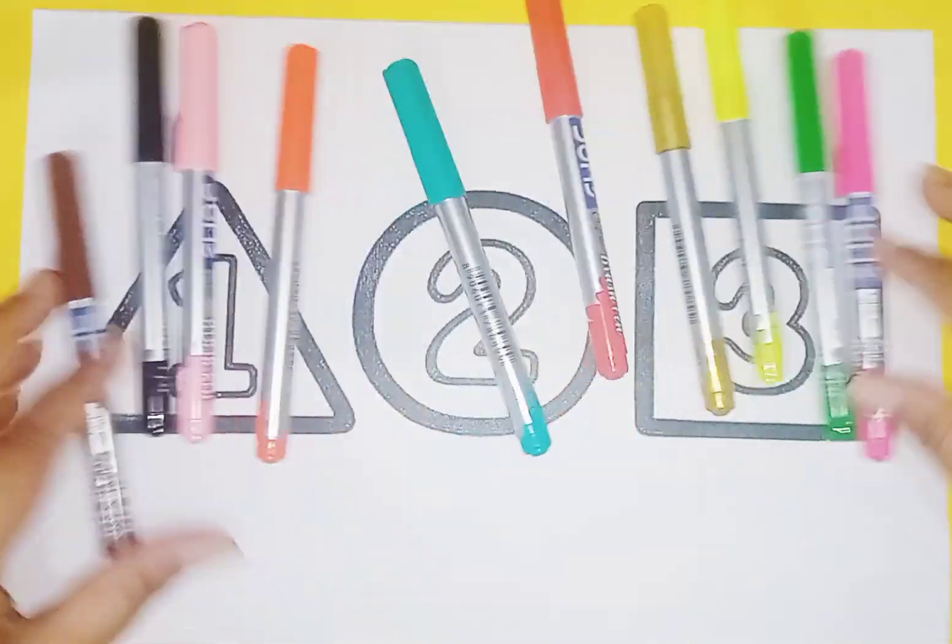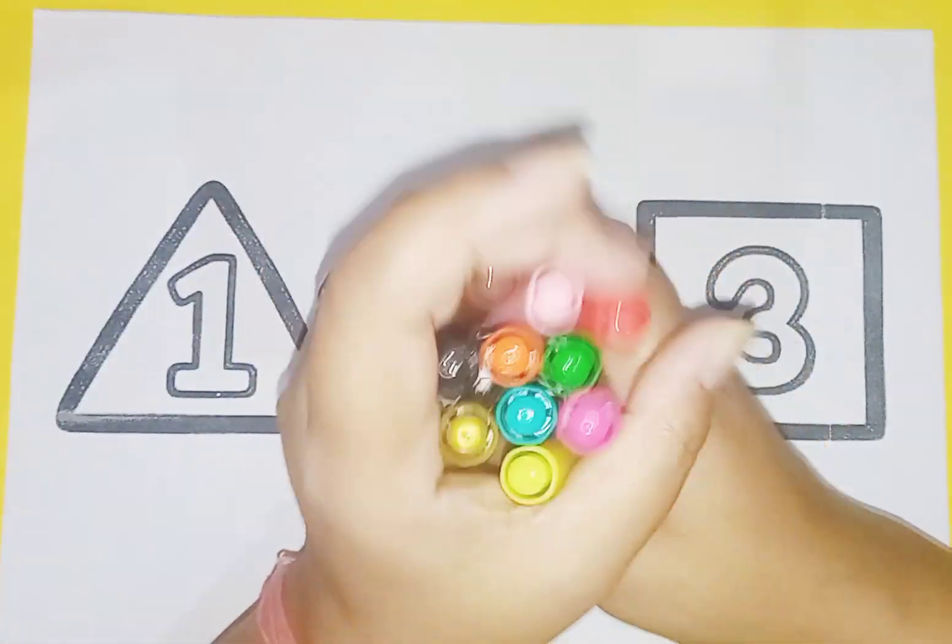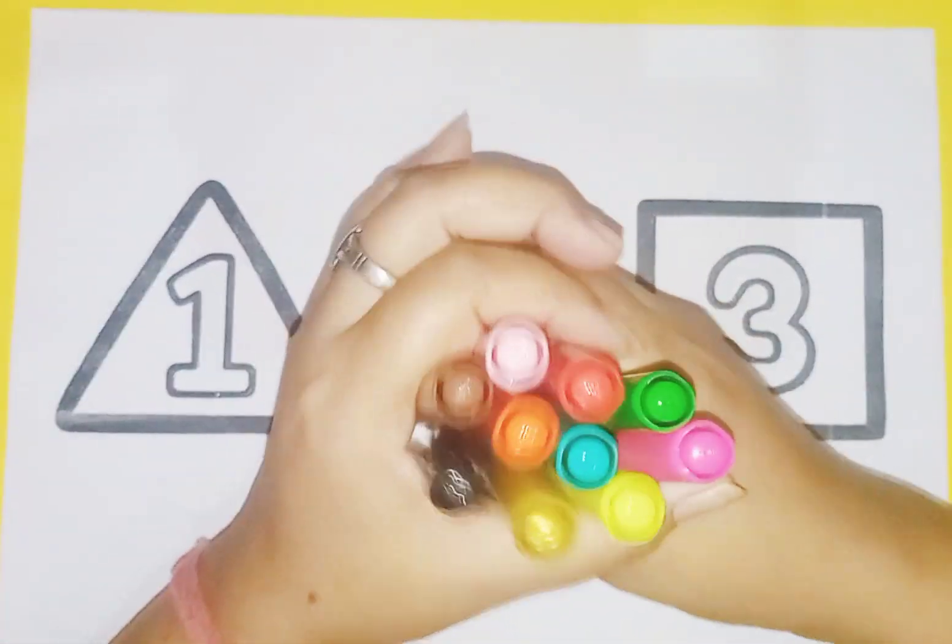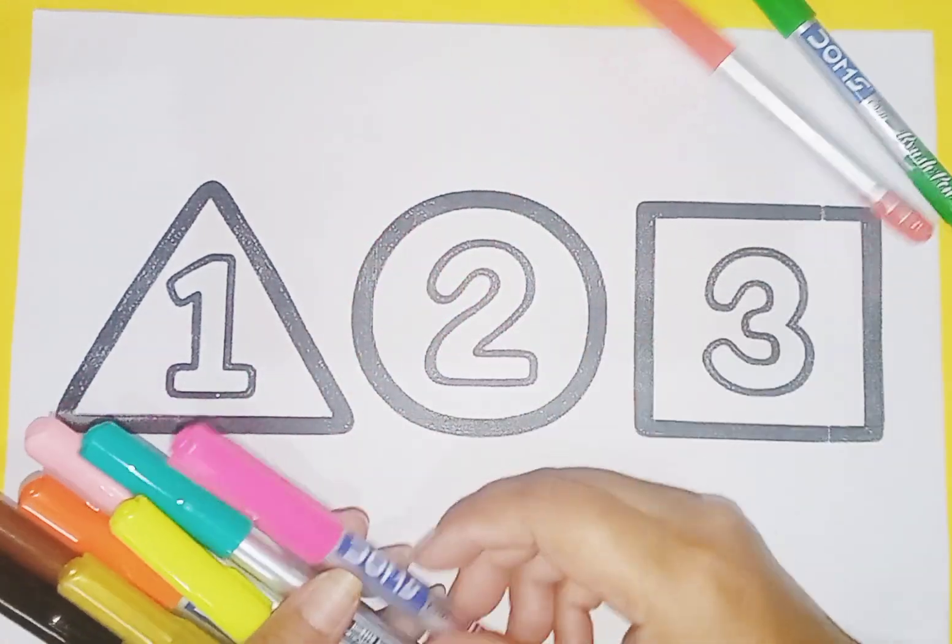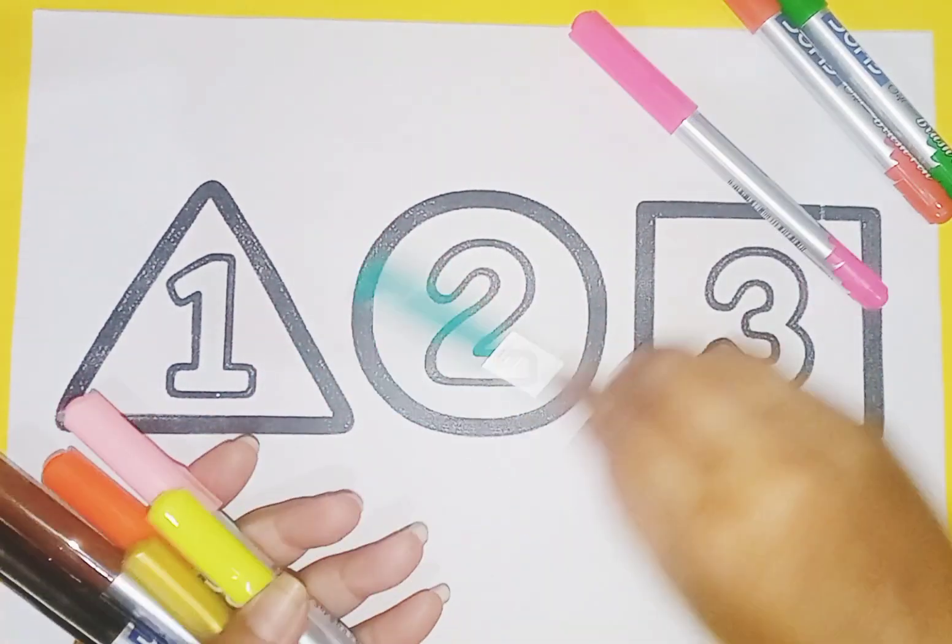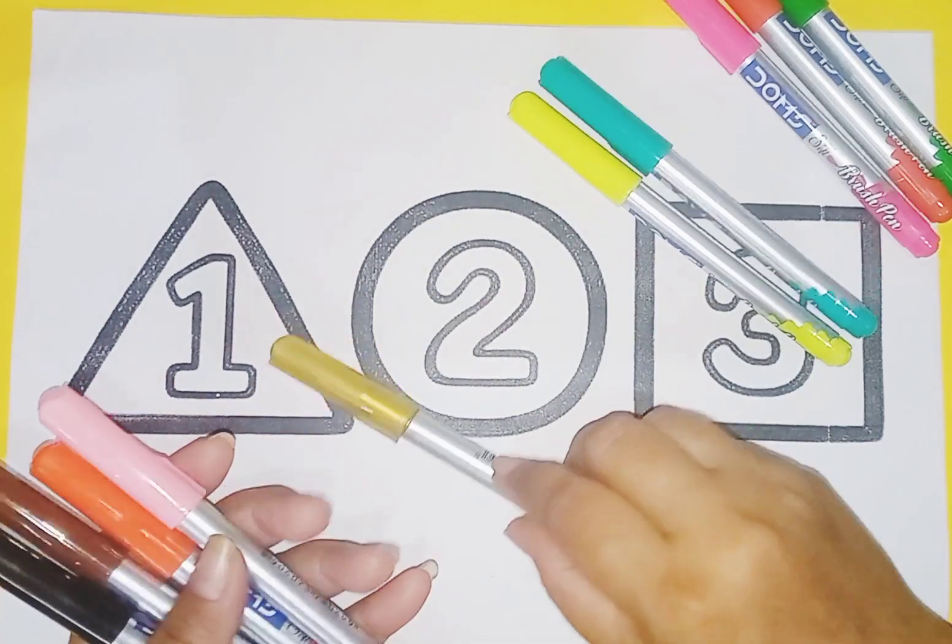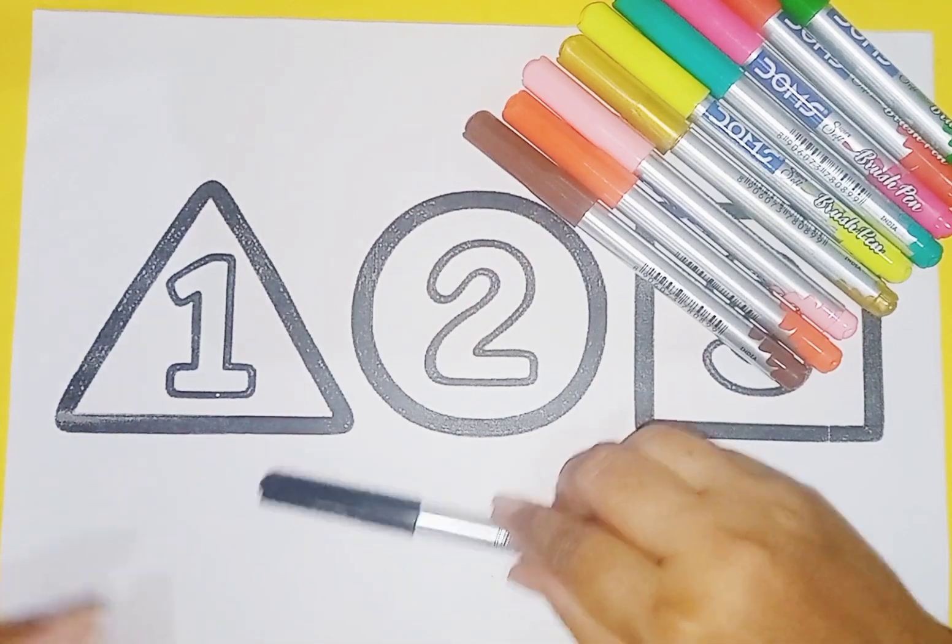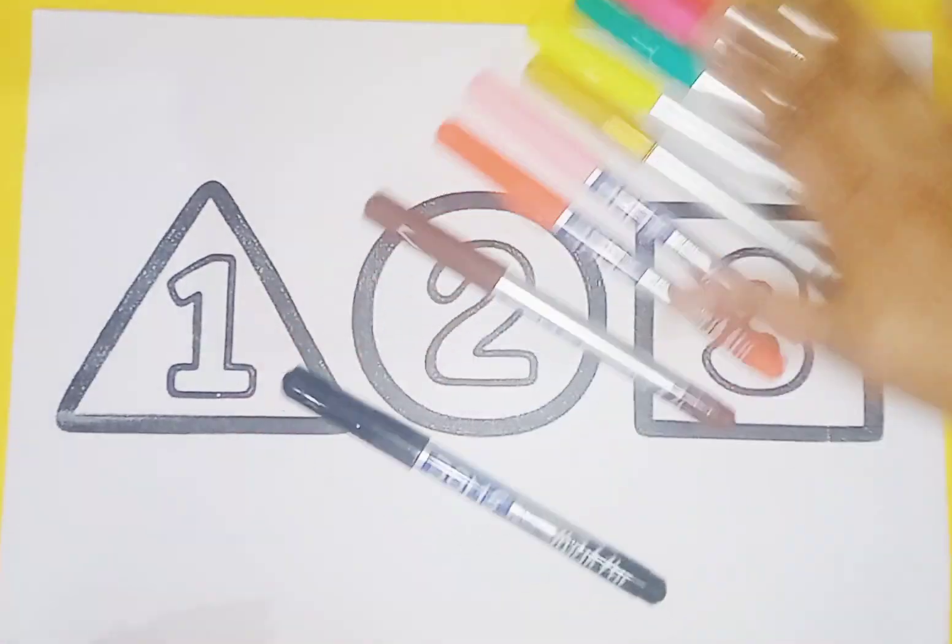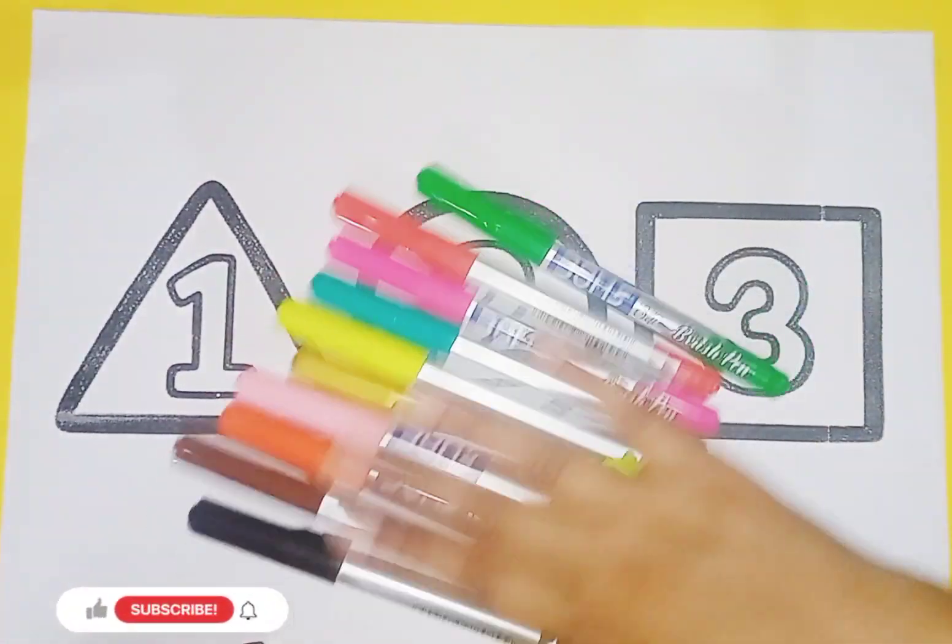These are colors, cute cute colors. Let's learn some colors: light green, red, pink, sea green, palette yellow, golden, light pink, orange, brown, and black. These are colors.